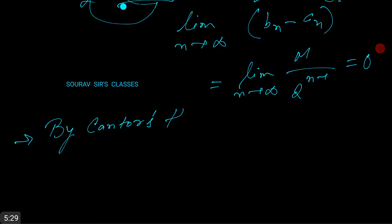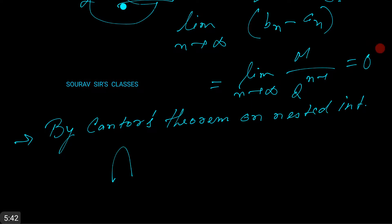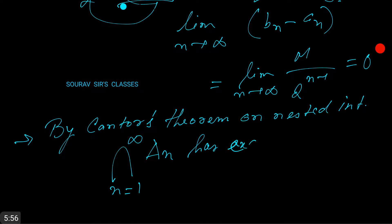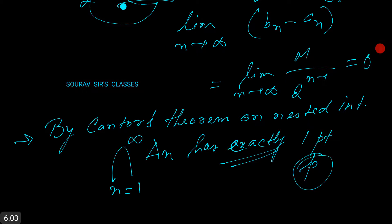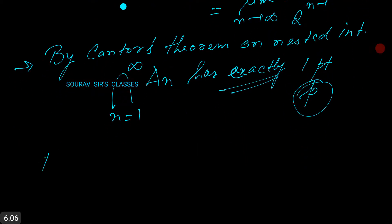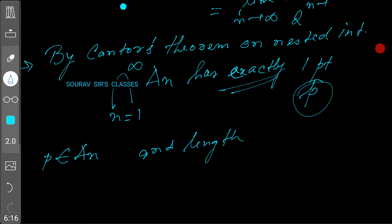By Cantor's theorem on nested intervals, the infinite intersection of A_n from n equals 1 to infinity has exactly one point. Let this be p. Note that p belongs to A_n for all n.